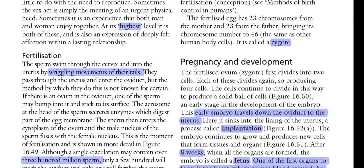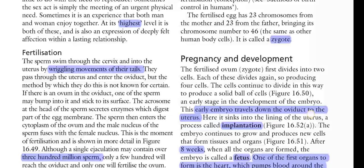The endometrium is the innermost wall of the uterus, where the blastocyst is implanted. The early embryo travels down the oviduct to the uterus, sinks into the lining, and this process is called implantation.